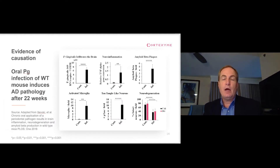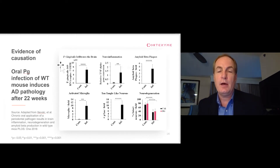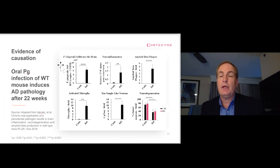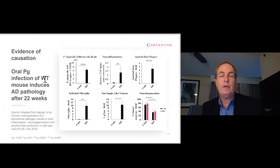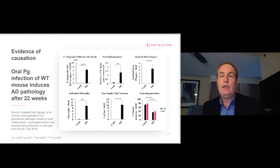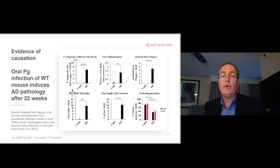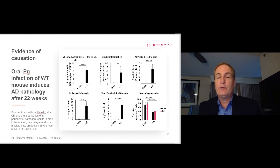These major findings in the animal model have now been generated by us and replicated at five different independent scientific laboratories. In particularly elegant work done at the University of Illinois at Chicago, you put P. gingivalis in the mouth on the teeth and gums of regular mice, and you see P. gingivalis infiltrating the brain. You see neuroinflammation with multiple markers — here's TNF-alpha. You see amyloid plaque buildup and tau-tangle-like neurons. You also see activation of microglia, the immune cells of the brain. And perhaps most importantly, neurons die off in the hippocampus, one of the key memory areas of the brain.